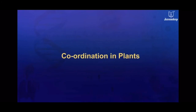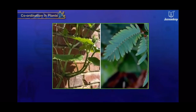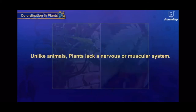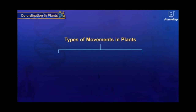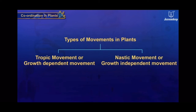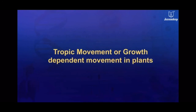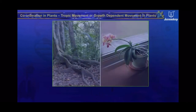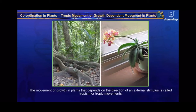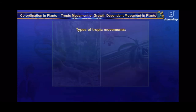Plants exhibit a wide range of movements, mainly in response to stimuli. Unlike animals, they lack a nervous or muscular system. Plants exhibit two types of movements: tropic movement (growth-dependent movement) and nastic movement (growth-independent movement). The movement or growth in plants that depends on the direction of an external stimulus is called tropism or tropic movement. Plants show different kinds of tropic movements: phototropic, geotropic or gravitropic, hydrotropic, and chemotropic movement.